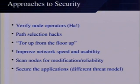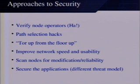Moving on to approaches — how do we address some of these problems? The first approach, when the network was smaller, was to try and verify node operators so that the network maintainers would know who they are. This is no longer the case: you can just go to Vidalia, say yes to running a Tor node, and it sets up your configuration. The network has grown too large for verification to be applicable. Path selection hacks: the client chooses paths in specific ways with certain security restrictions placed on them.